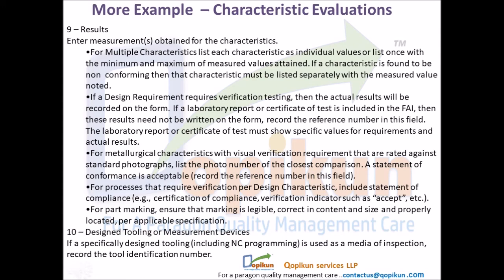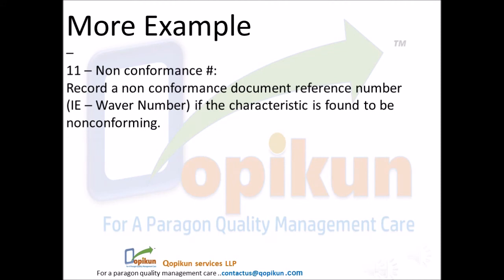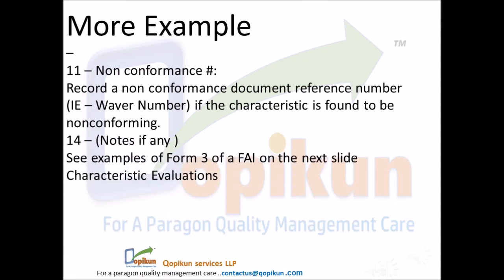Field 10 — designed tooling or measurement devices: if a specifically designed tooling, including NC programming, is used as a media of inspection, record the tool identification number. Field 11 — non-conformance: record a non-conformance document reference number, e.g. waiver number, if the characteristic is found to be non-conforming. Field 14 — notes if any. See examples of Form 3 of a FAI on the next slide: characteristic evaluations.